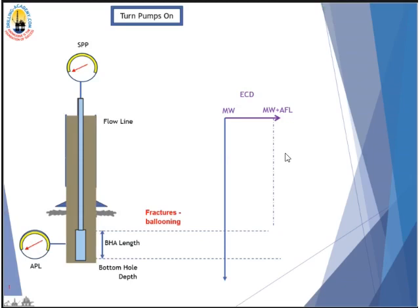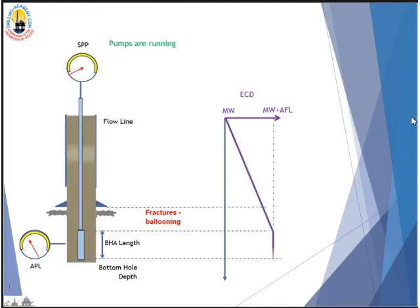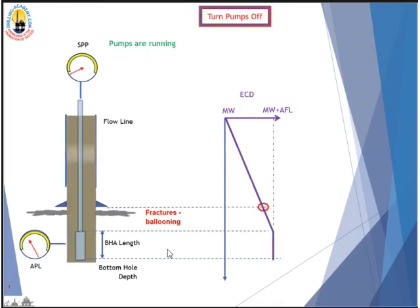So what is wellbore ballooning? Let's take a look at this visual. When we are drilling or circulating, there is annular friction loss, AFL, in the annulus.